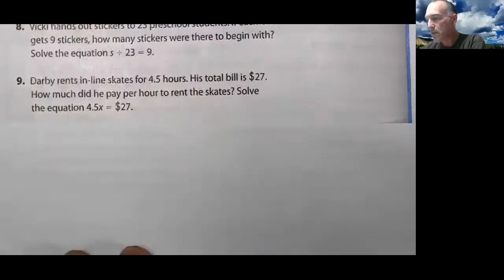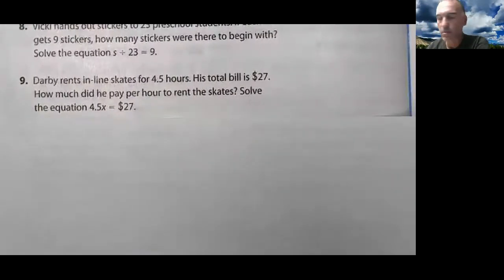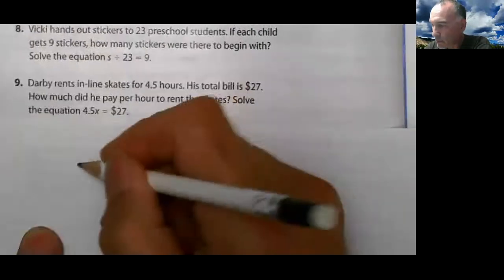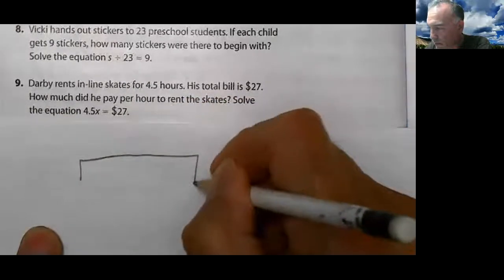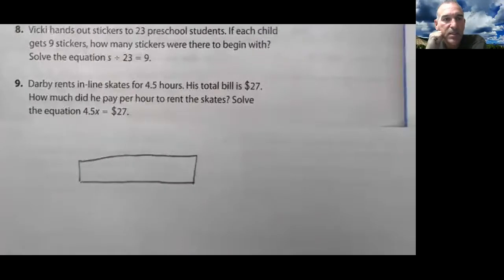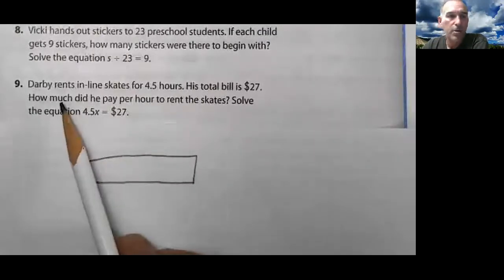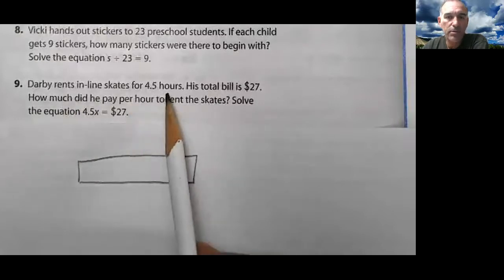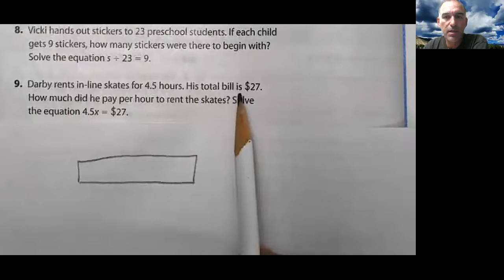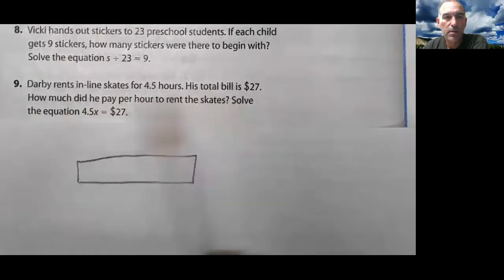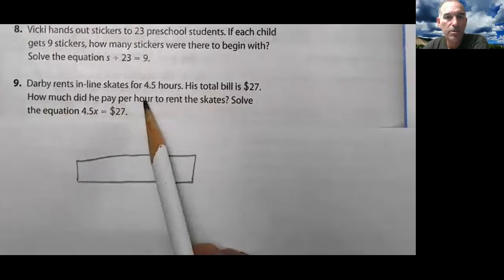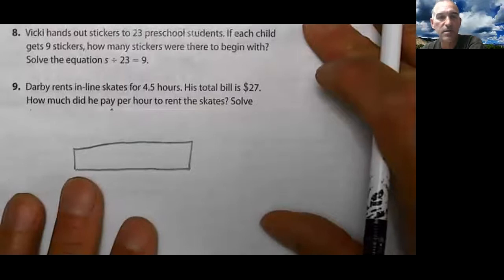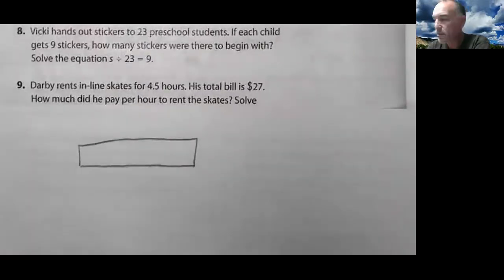Let's go on. Ready? Let's look at this one. Number nine. I'm going to draw a unit bar. Good enough. It says Darby rents inline skates for four and a half hours. Look at that. The total bill is $27. How much did he pay per hour to rent the skates? I'm going to block that off because I don't want to see it.